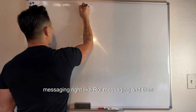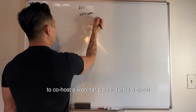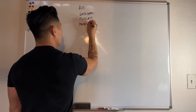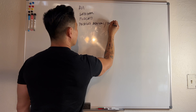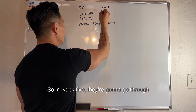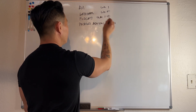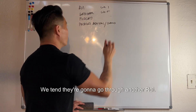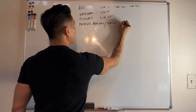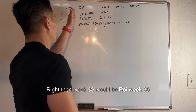So I already covered ROI messaging and different types of content lures - like co-hosting a webinar, being a podcast guest, or inviting them to a product advisory board. We talked about how to rotate these: cohort one goes through an ROI sequence week one, then a podcast sequence week five, another ROI week ten, podcast week fifteen, ROI week twenty, product advisory board week twenty-five, and then you rotate again - ROI week thirty, webinar week thirty-five, and so on.